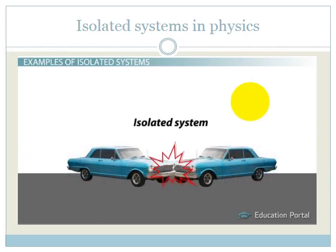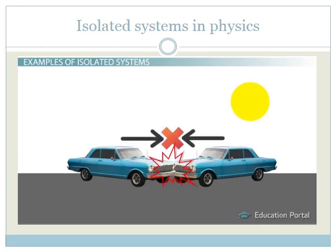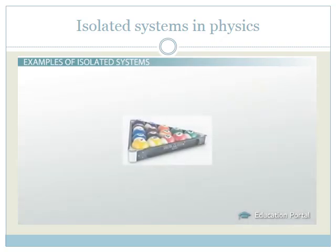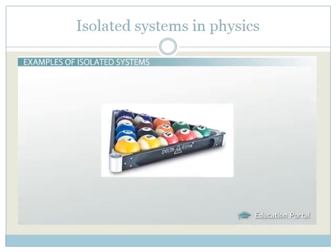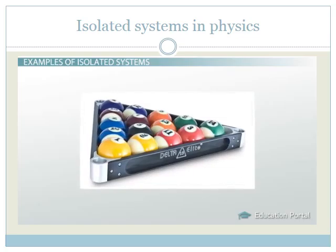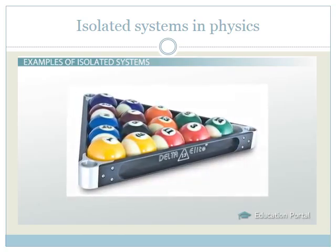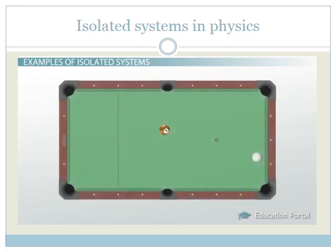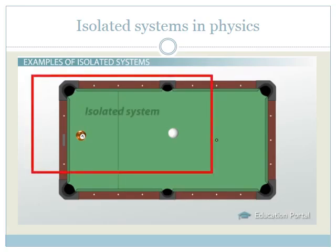This is because the forces they exert on each other cancel out as they collide and there are no external forces involved. Billiard balls are part of an isolated system because as they collide, they too exert balance forces on each other. When the cue ball hits another ball, the momentum from the first ball is transferred to the second ball, sending it rolling across the table. In the absence of friction from the table, the two balls are part of an isolated system because there are no external forces at work.